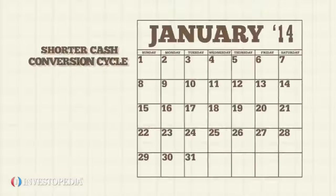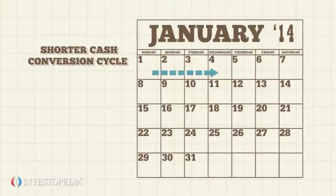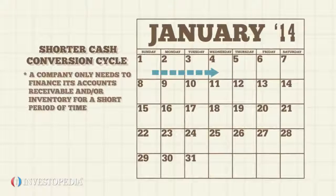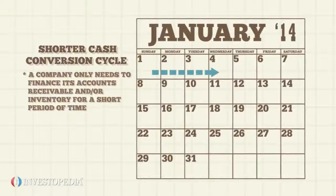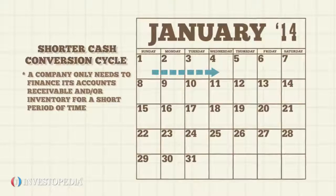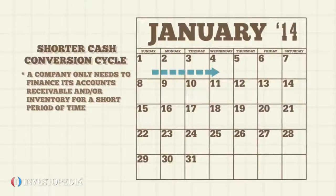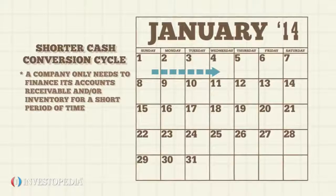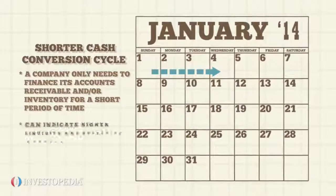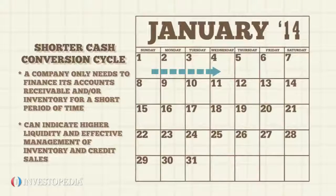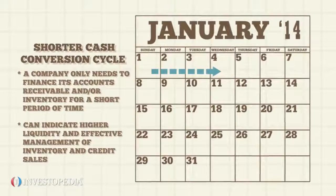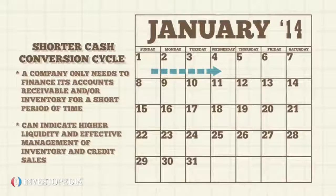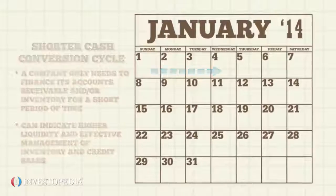Usually, a shorter cash conversion cycle means a company only needs to finance its accounts receivable and/or inventory for a short period of time. This can indicate higher liquidity and effective management of inventory and credit sales.